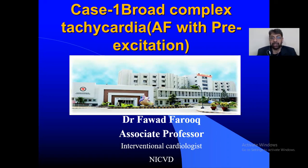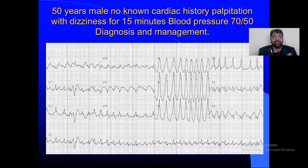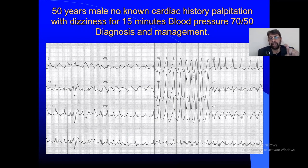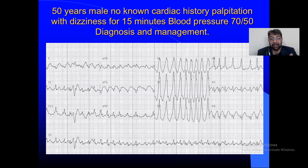This was the ECG I shared: a 50-year-old male, no known cardiac history, palpitation with dizziness for 15 minutes, blood pressure 70/50 — diagnosis and management. I saw various answers: RBBB was mentioned, and some answered it as an ST elevation MI. However, there is no chest pain in the history — it's pure palpitation in a previously normal person. Always correlate your ECG findings with the clinical presentation.